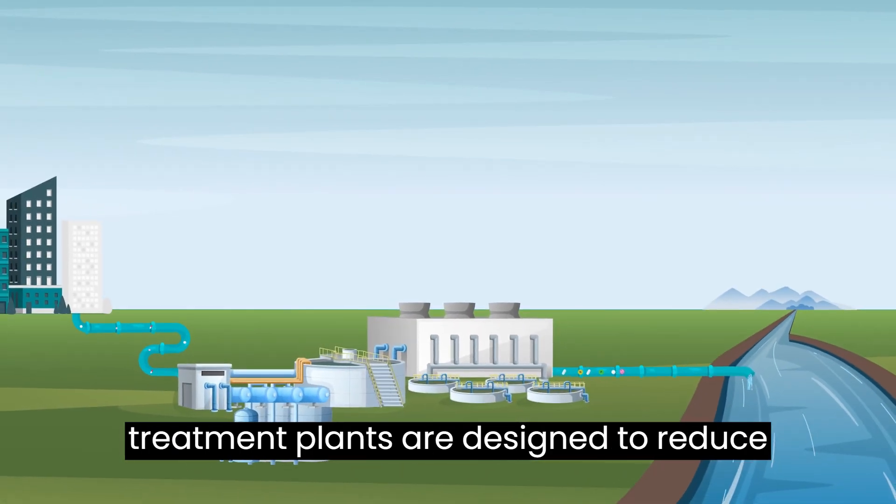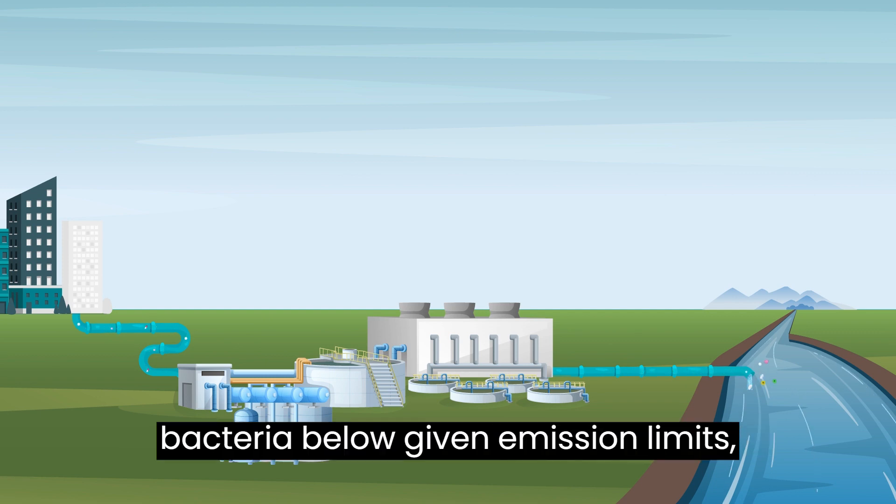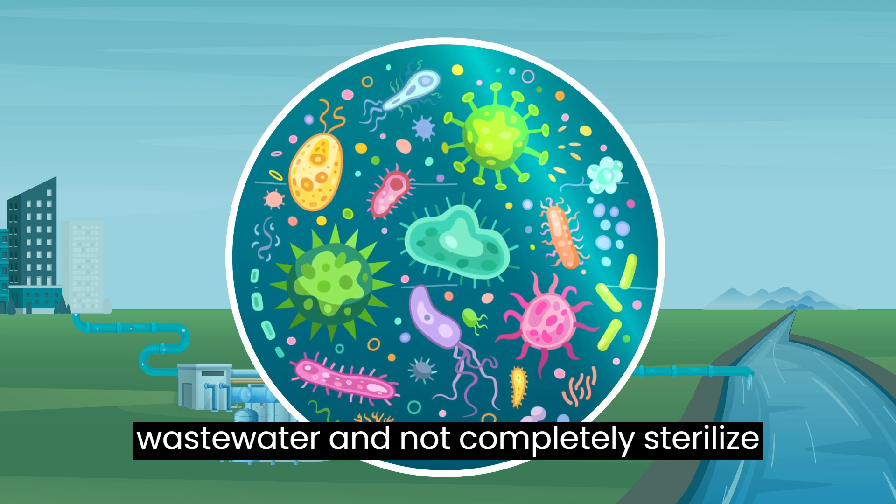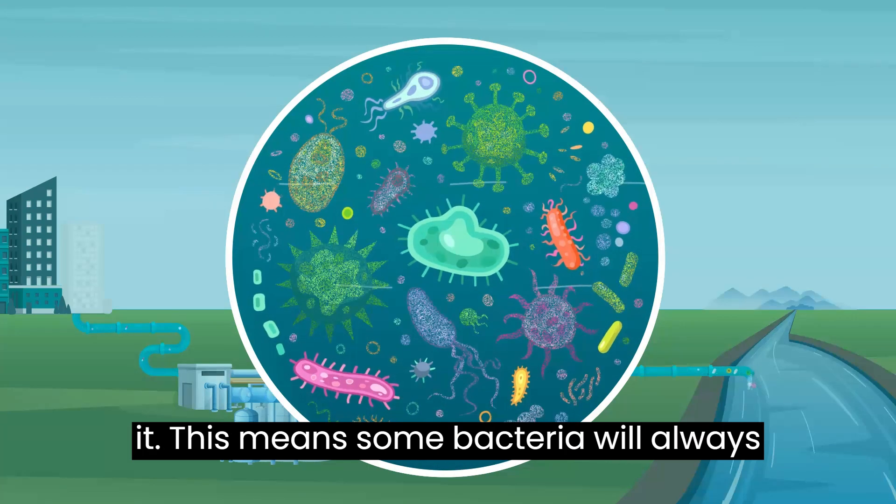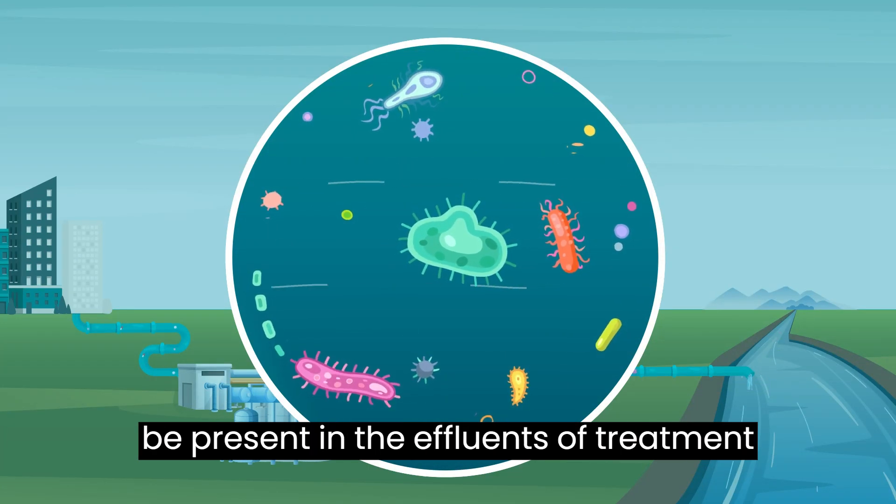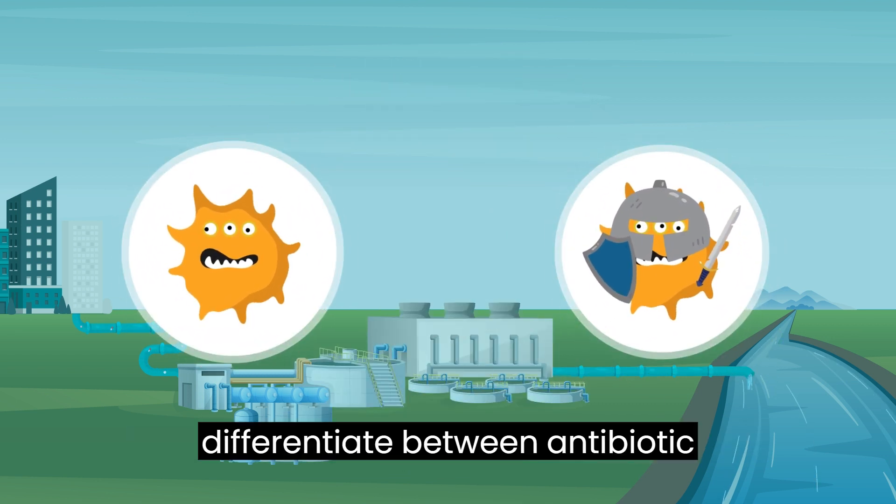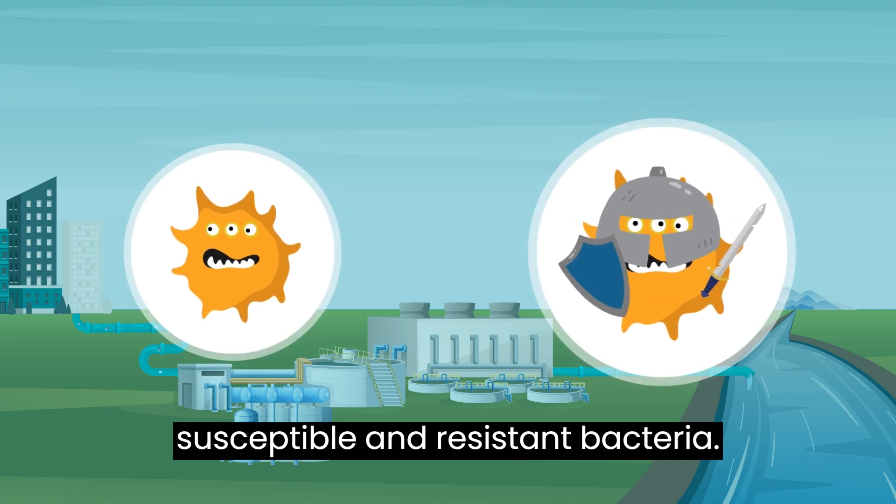Wastewater treatment plants are designed to reduce bacteria below given emission limits, meaning remove most bacteria from the wastewater and not completely sterilize it. This means some bacteria will always be present in the effluents of treatment plants. The used technology also cannot differentiate between antibiotic susceptible and resistant bacteria.